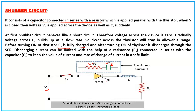Before turning on the thyristor, Cs is fully charged. After turning on the thyristor with a gate pulse, the capacitor discharges through the SCR. This discharge can be limited by the series resistor Rs, which keeps the value of current and rate of current rise within a safe limit. So in the snubber circuit, the capacitance does the main work — it charges, and after turn-on it discharges into the SCR, keeping dv/dt within the allowable rate.